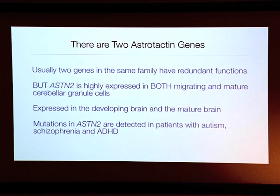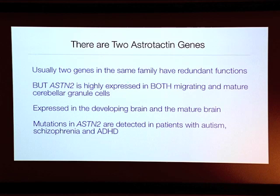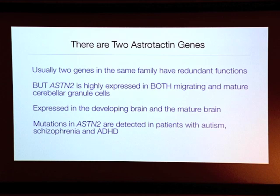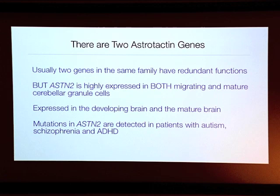Over the years we've studied a great deal about astrotactin. In the last two or three years, we made a discovery that surprised us: there are two astrotactin genes, not one. Usually genes appear in families, and generally if one has two different genes, particularly adhesion genes, they're redundant — they back each other up. But in this case, the two genes are expressed at completely different times. One gene is expressed during migration, and the other is expressed during migration but also later in the adult, well after migration is finished and after the circuitry is working. Excitingly, there have been seven or eight papers showing that mutations in the second astrotactin are detected in patients with developmental defects — particularly autism, schizophrenia, and attention deficit disorder.